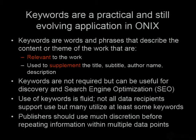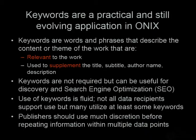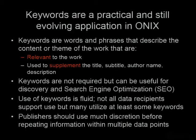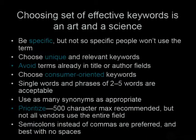Keywords is a very practical and ongoing application in ONIX. Not a lot of publishers are using this, but it's something you can add. Not all vendors will take keywords, but some do. You don't want to repeat the same words that are already in your title or author field — it's meant to supplement. So if it's a book on World War II, you can have words like WWII, Pacific Theater, things that would supplement and help discovery and search engine optimization. You want to be specific, try to be unique, but don't be so specific that nobody would ever search on it. Try to prioritize, because sometimes they'll cut off after a 500-character limit.